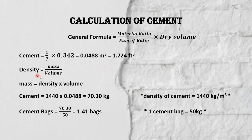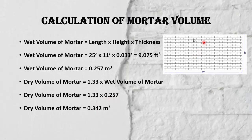Convert this volume into mass using the formula: mass equals density multiplied by volume. The density of cement is 1440 kg/m³ and the volume is 0.048 m³, so 70.3 kilograms of cement is required for the plaster of this wall.